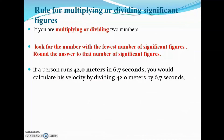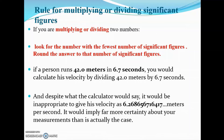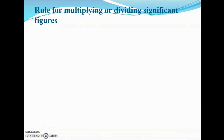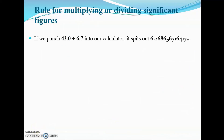For example, in this division problem: if a person runs 42.0 meters in 6.7 seconds, you calculate his velocity by dividing 42.0 by 6.7. The problem is you get a number like 6.2686... meters per second, and we perfectly well know we don't know his velocity with that degree of precision. Using all those digits would imply a lot more certainty than we actually have.